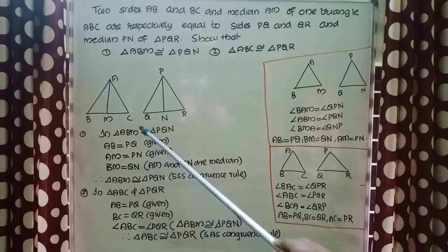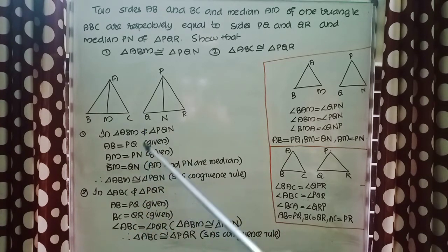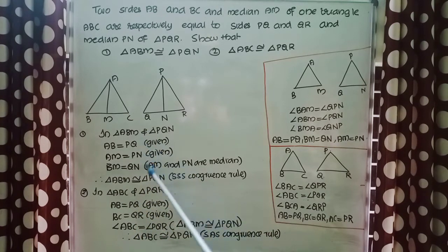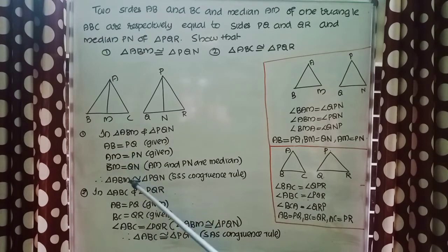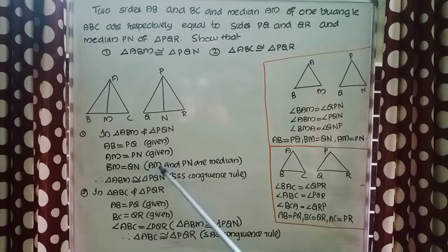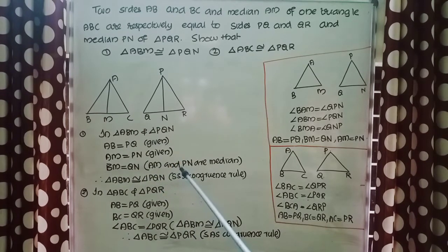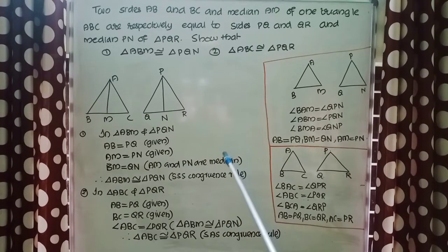So we have three conditions — three sides. We can conclude that triangle ABM is congruent to triangle PQN by the SSS congruence rule.